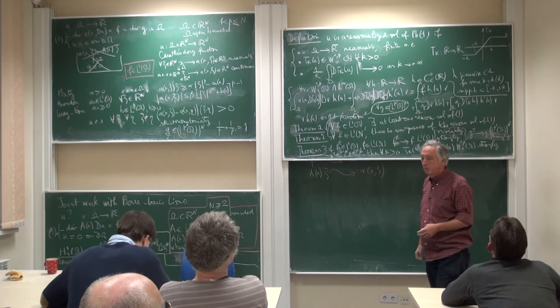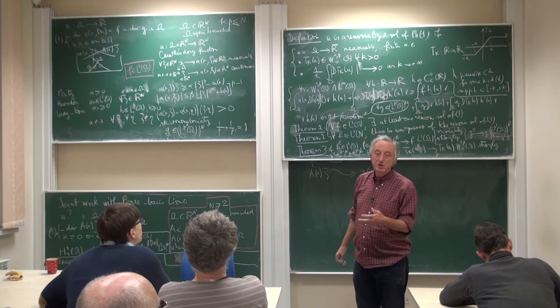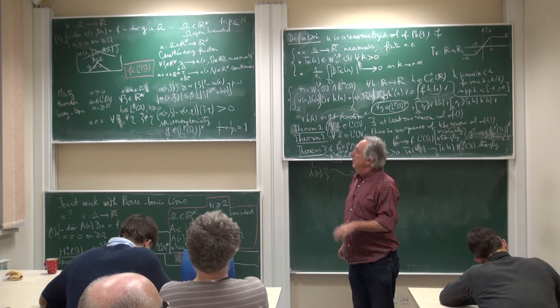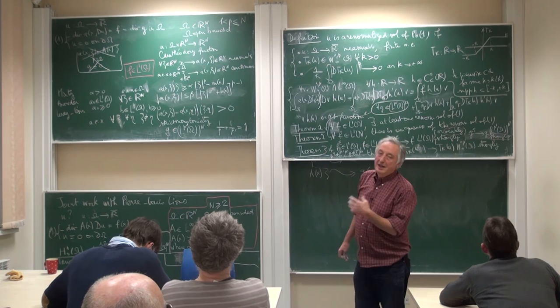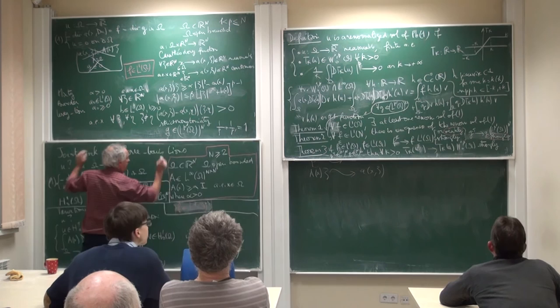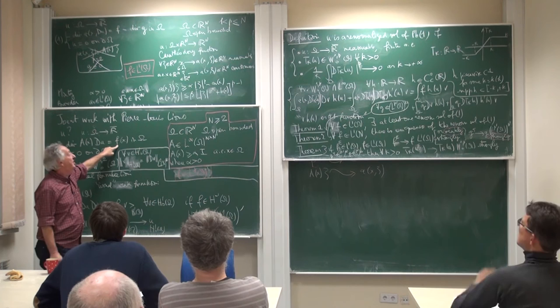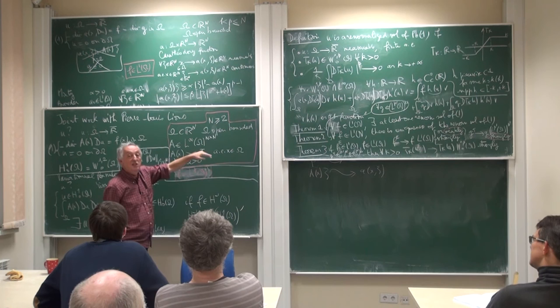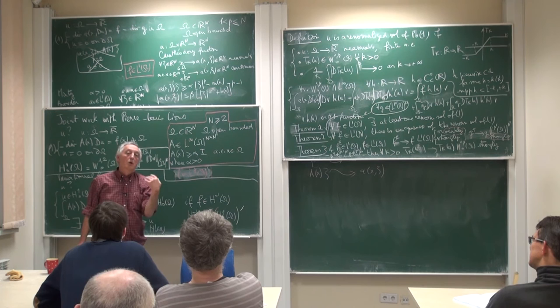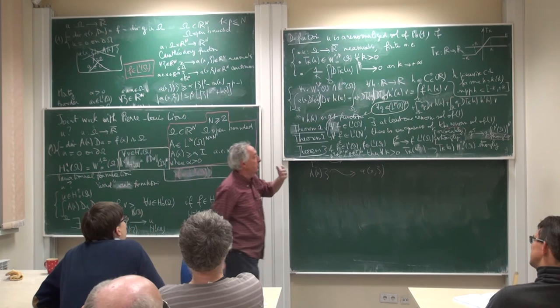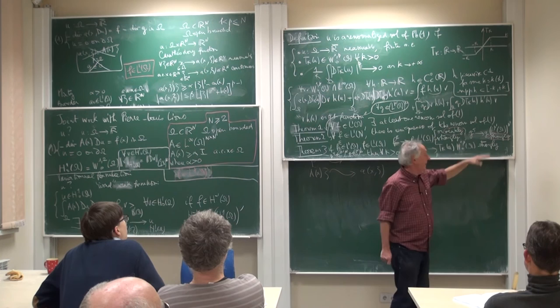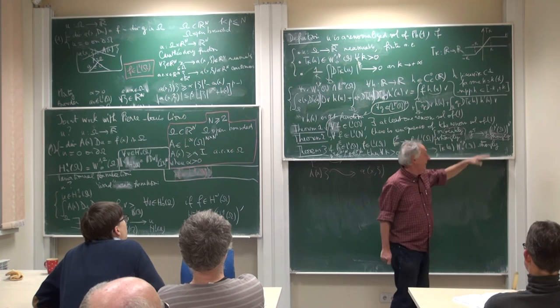However, weak convergence in L¹ is something which is relatively strong. More exactly, look at the case of the linear problem: if f converges weakly in L², since Ω is bounded this is strongly convergent in H⁻¹. Compactness comes from this fact. So here, the weak convergence in L¹ gives you compactness. This is not true exactly, but not so false.